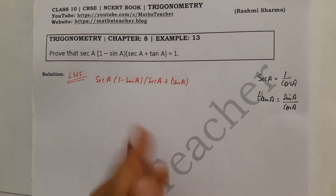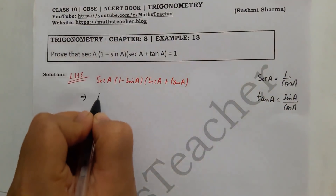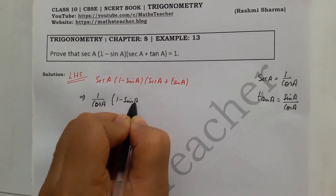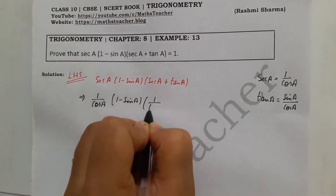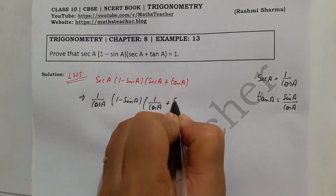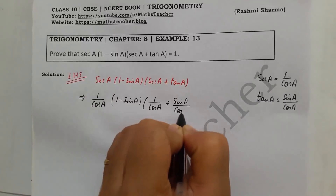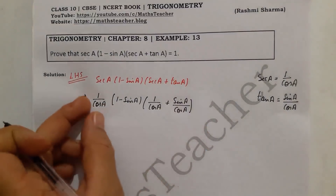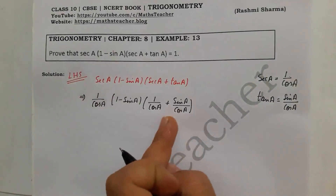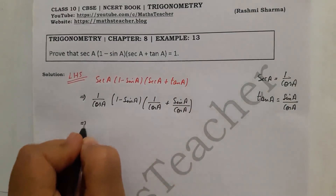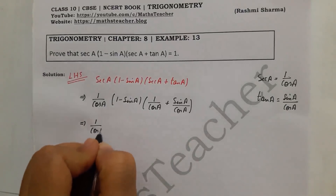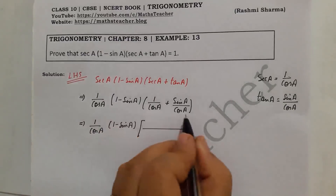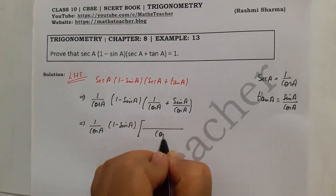Now we are going to replace the values. We replace sec a with 1 by cos a, and keep 1 minus sin a as it is. For the bracket (sec a plus tan a), we replace sec a with 1 by cos a and tan a with sin a over cos a. Now we take LCM here — both denominators are cos a, so LCM is cos a.